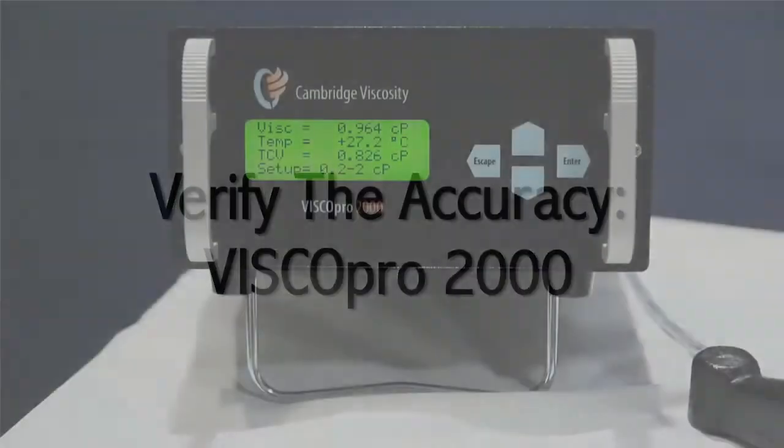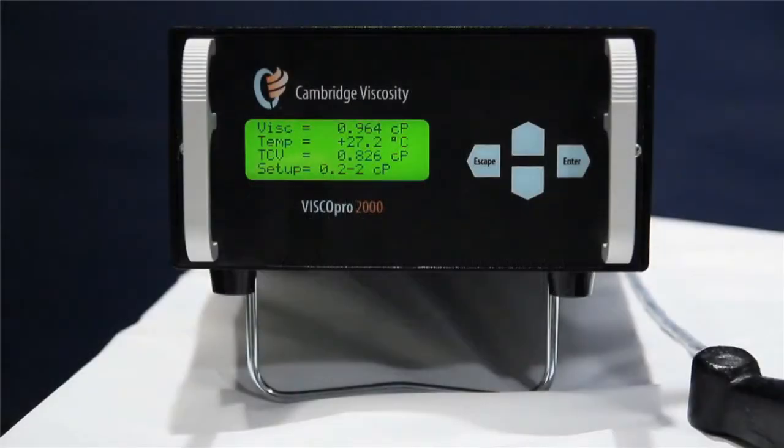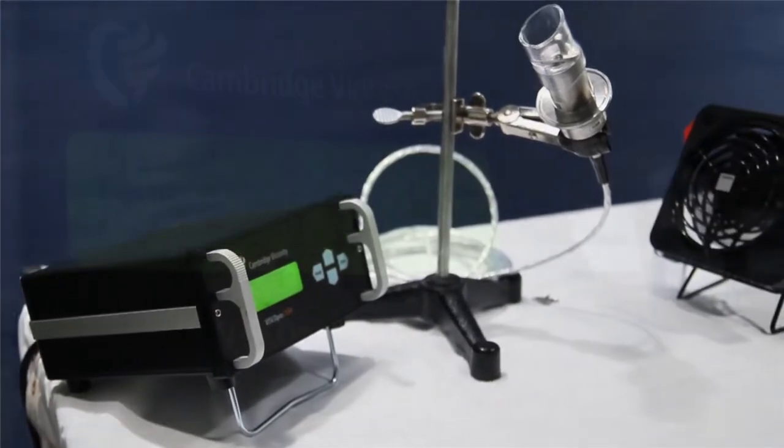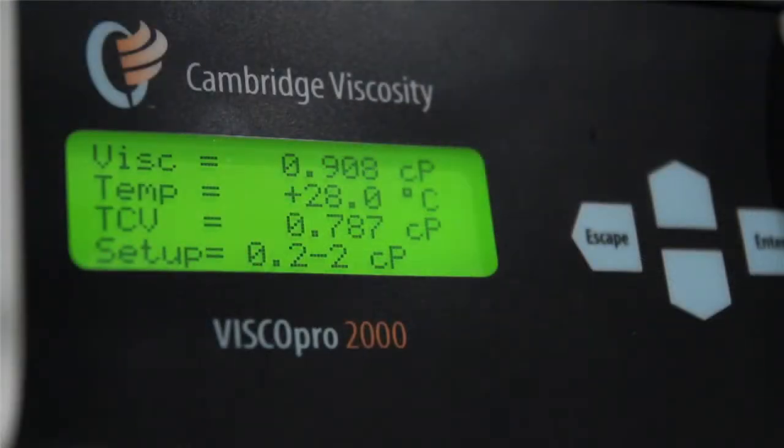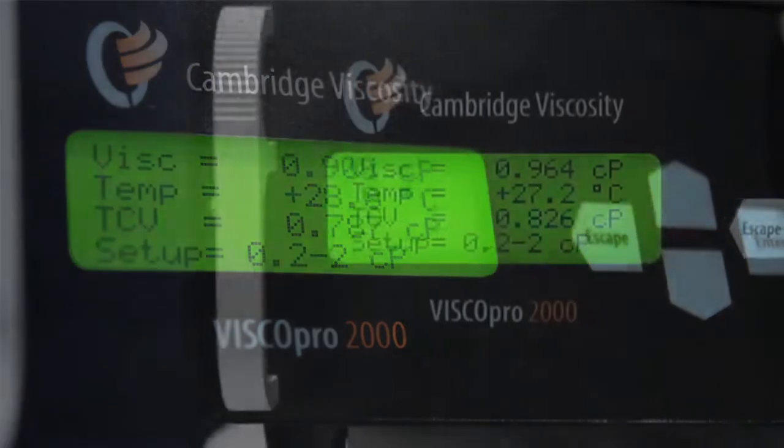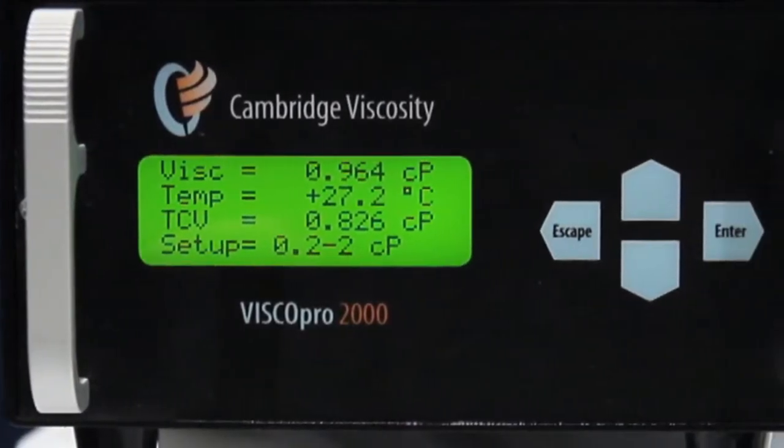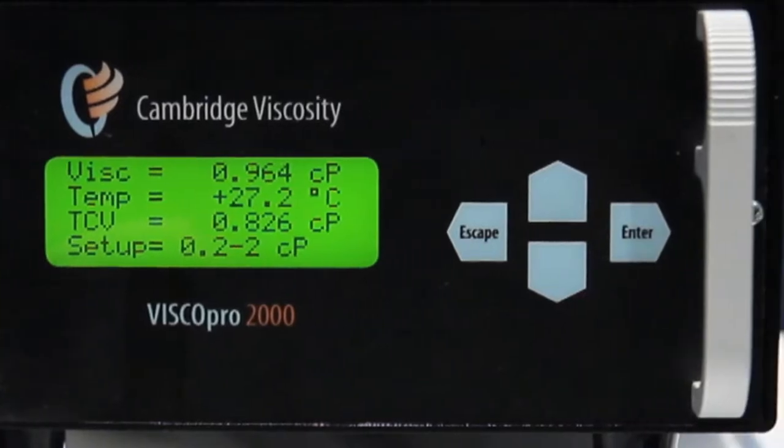We are now going to show you how to verify the accuracy of your VSCO Pro 2000. The same technique can be used to verify the accuracy of the VSCO Pro 1600. However, if the 1600 does not have the optional display, viscosity and temperature information can be obtained through the 4-20 mA signals or through the RS-485 serial connection.